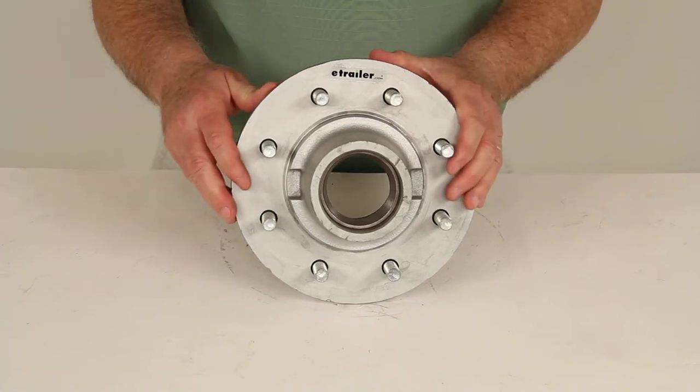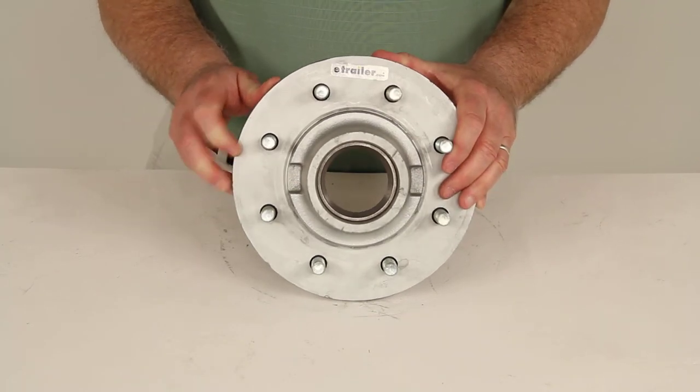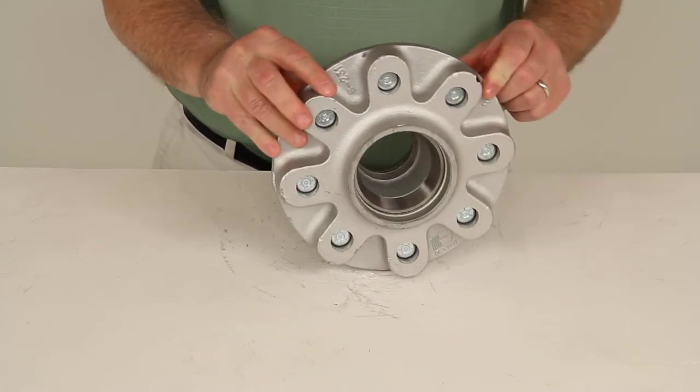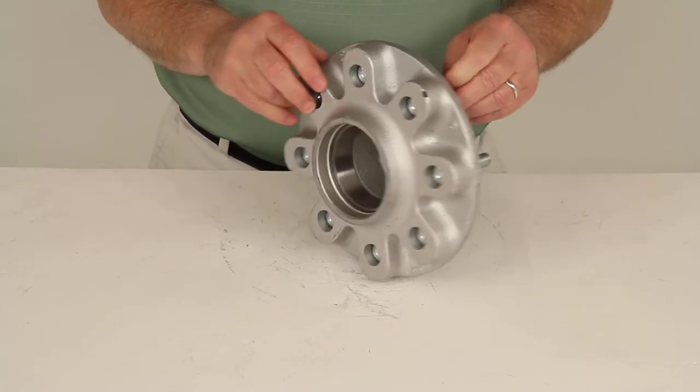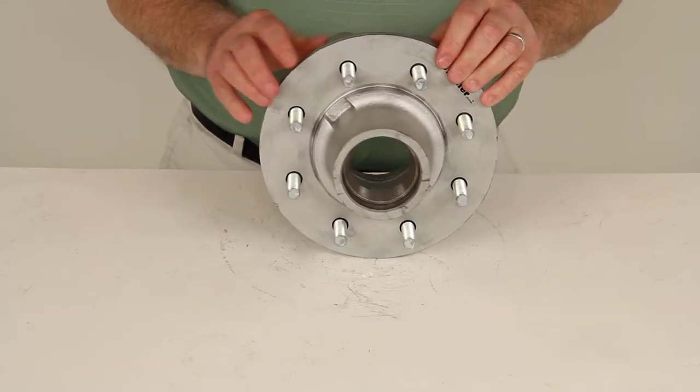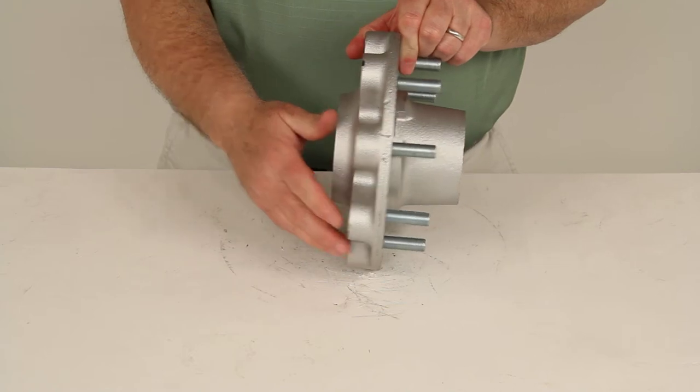Today we're going to review part number 8-231-50. This is the Dexter Trailer Hub for 5,200-pound to 7,000-pound axles. As you can see, it is an 8 on 6 1/2-inch bolt pattern and has the Gal Dex finish on it.